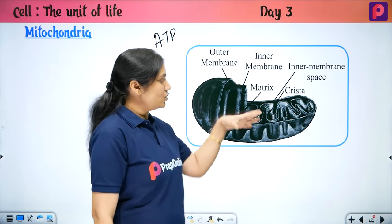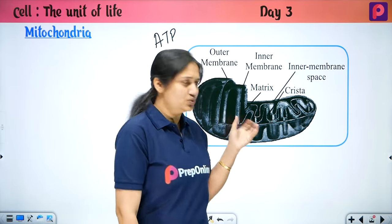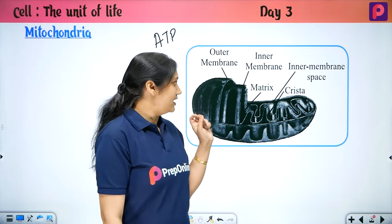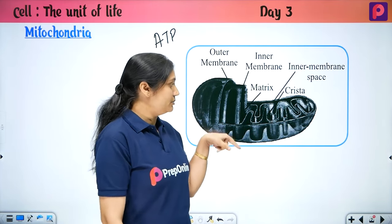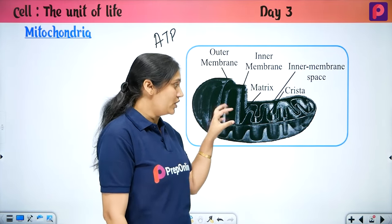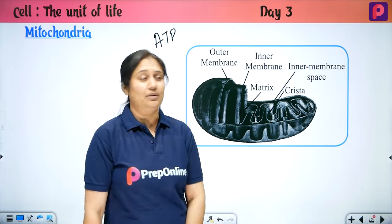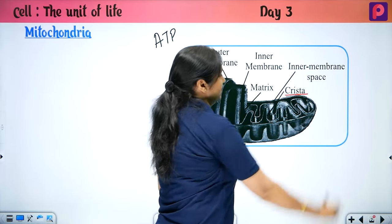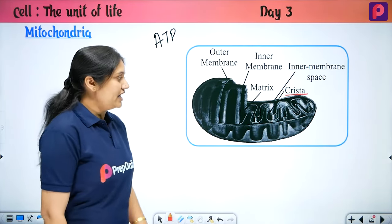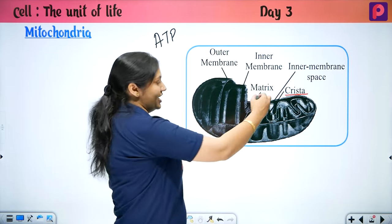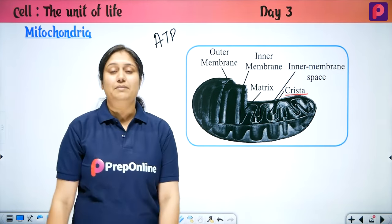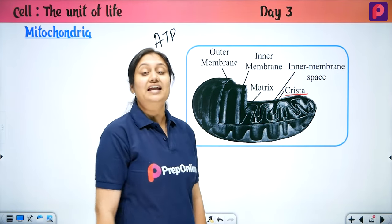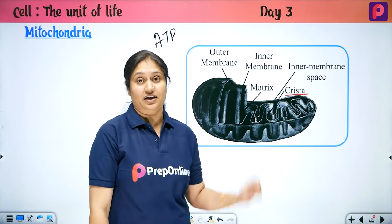How is this structure? It looks like a shoe shape structure. If you look at the internal structure, we call the folds 'cristae'. And these cristae are actually folds of the inner membrane of the mitochondria.